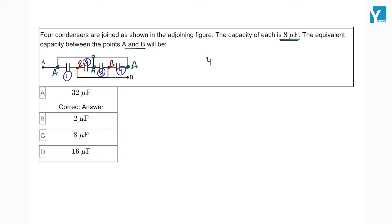and the fourth one. All four capacitors are in parallel. If all capacitors are in parallel, then this will be 4 times C capacity.